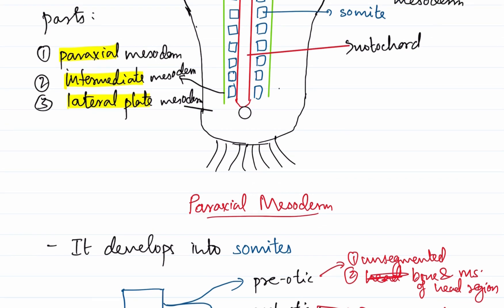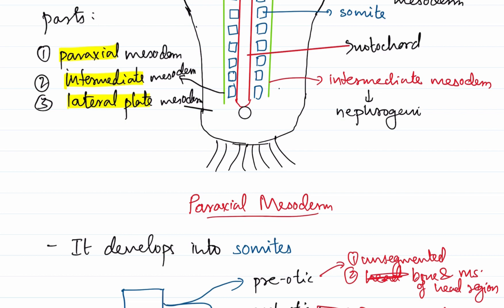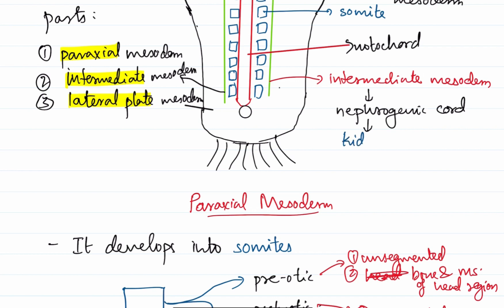Now let's move to the second part, which is the intermediate mesoderm. The intermediate mesoderm will develop into the nephrogenic cord. As the name suggests, it turns into the nephrogenic cord, and the nephrogenic cord will give rise to the kidney and gonads. So these are the derivatives of the intermediate mesoderm.